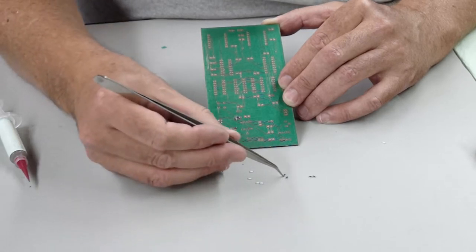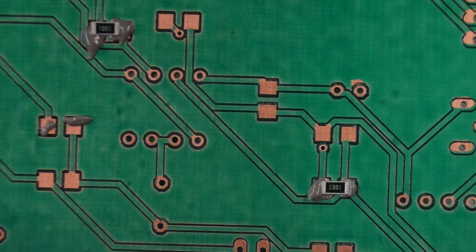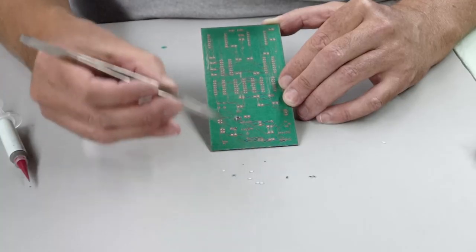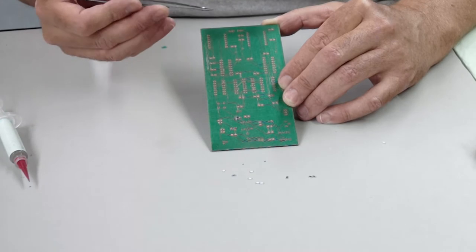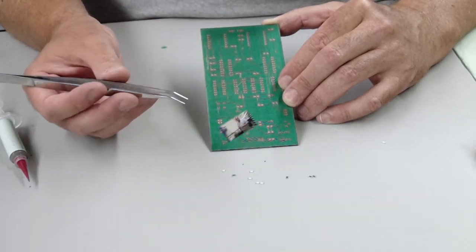When you go to place your next part, make sure that you put the value up and that it's facing exactly the same way. During the inspection process that will make it easier for ensuring that you have all the right values in the right place on your board.